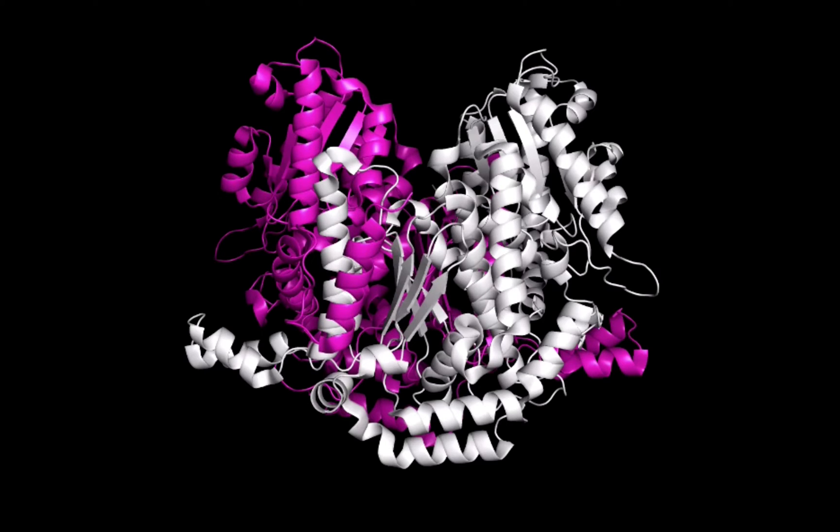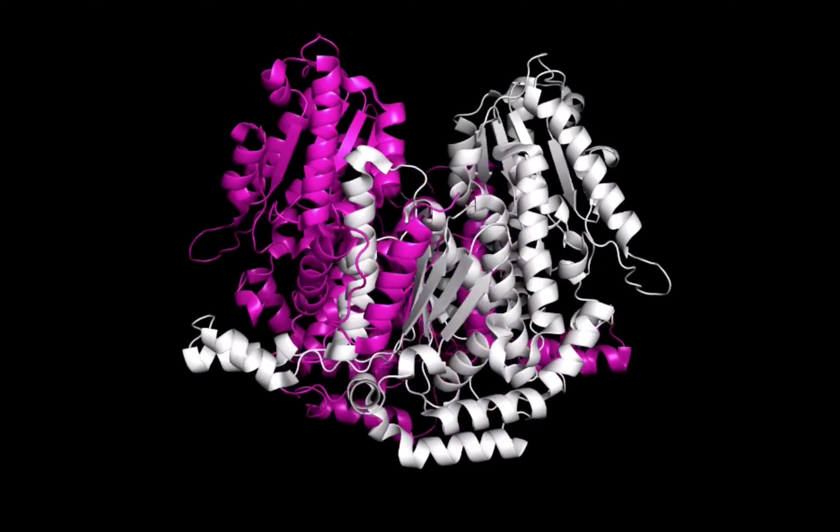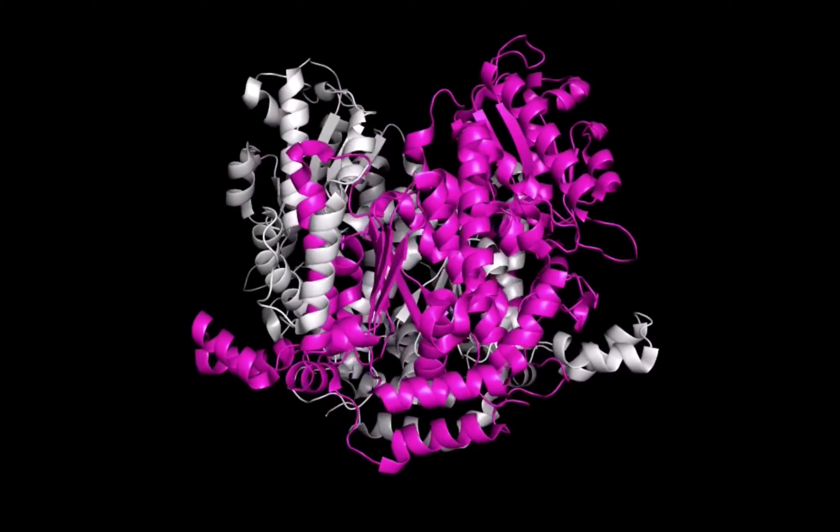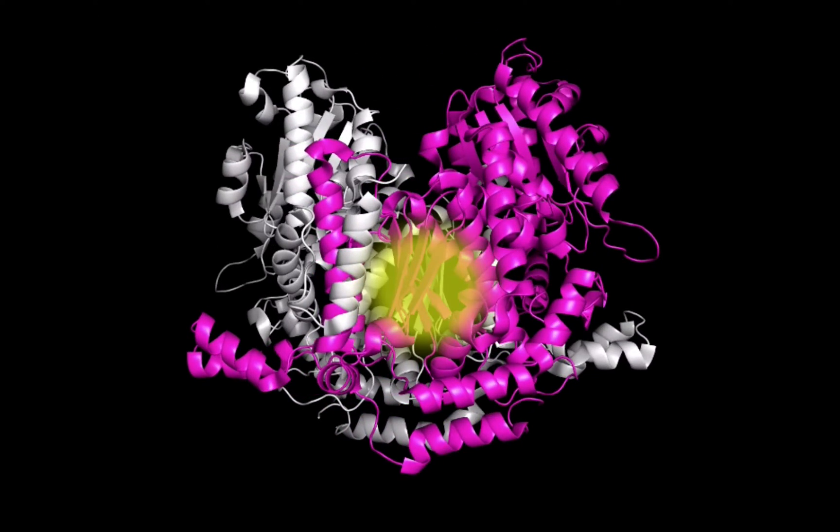This dimer has a lot of symmetry. I want you to focus on these beta sheets right here, on the half of the dimer that we've colored white. Now, I'm going to turn the protein 180 degrees. Notice this similar section of beta sheet on the other side, which is composed mostly of the magenta chain.